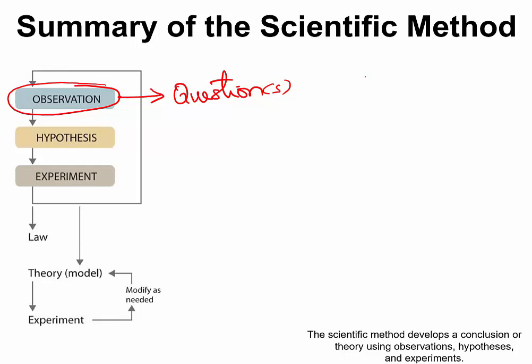Because scientists would then propose answers or solutions to the question. Those answers that are proposed, nobody knows if they are right or wrong. And that is what we call a scientific hypothesis.